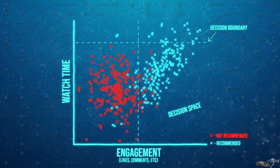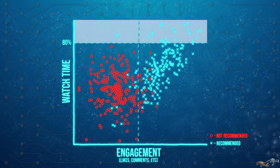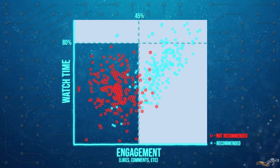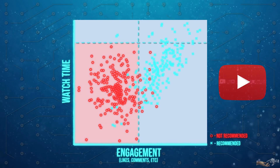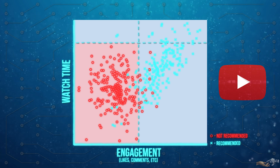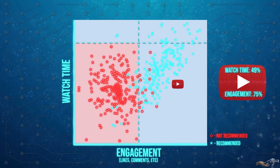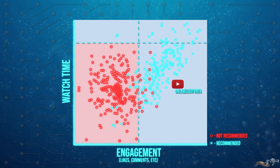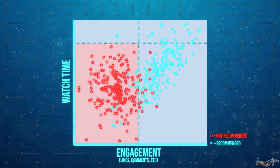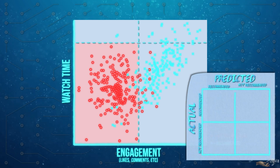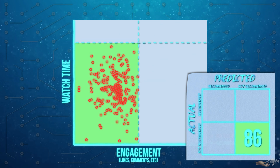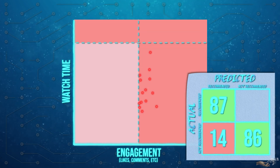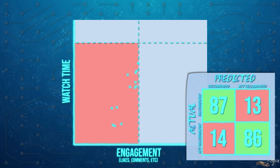From an eyeball perspective, let's draw the boundaries: if watch time is over 80% of the video duration and if 45% of the viewers engage with it, then the video will be recommended, otherwise it will not. Now let's say we get a new video that we have to determine if it was recommended. First we measure its variables and plot it into our decision space — this is referred to as unlabeled data. Based on our decision boundaries, our model would predict the output label. In this case, the video is recommended. Looking at our divided data, we can see that 86 videos were correctly classified as not recommended, and 87 as recommended. However, 14 videos were misclassified as being recommended when they were not, and 13 as not recommended when they were.